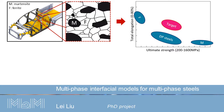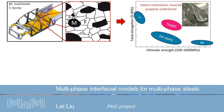As shown in this graph, a strength-ductility trade-off always exists. Therefore, in order to push DP steel development towards the optimal region — the target region — the failure behavior and mechanism in DP steel must be properly understood.